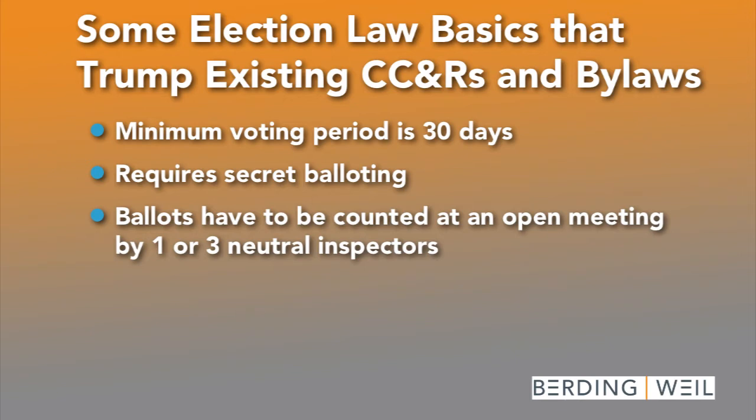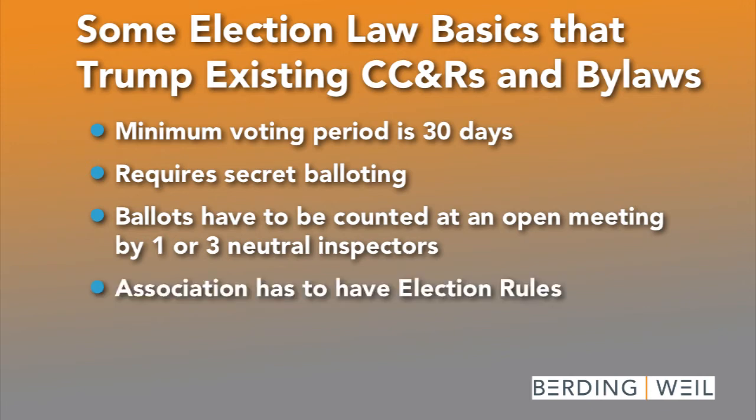They have to be counted by one or three neutral election inspectors. That neutral requirement is important — it means it can't be a director or the spouse of a director, it can't be a candidate, and it can't even be the manager or the association's lawyer unless the election rules say that's okay. The association also has to have election rules that mirror those requirements in the law, with a specific set of requirements that must be included.